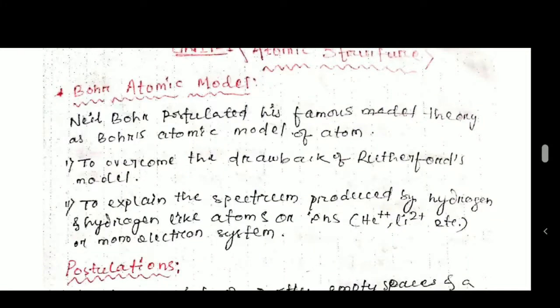Hi to all students. Today you are going to learn about atomic structure. Your first topic is Bohr's atomic model. This is a correction model of Rutherford's atomic model. Before Bohr proposed his model, Rutherford also proposed an atomic model, but there were some drawbacks found in his model. In order to correct that, Bohr proposed his model, known as Bohr's atomic model of the atom.